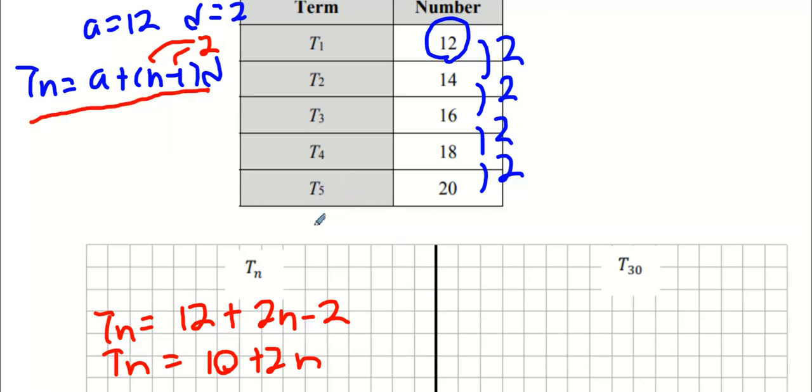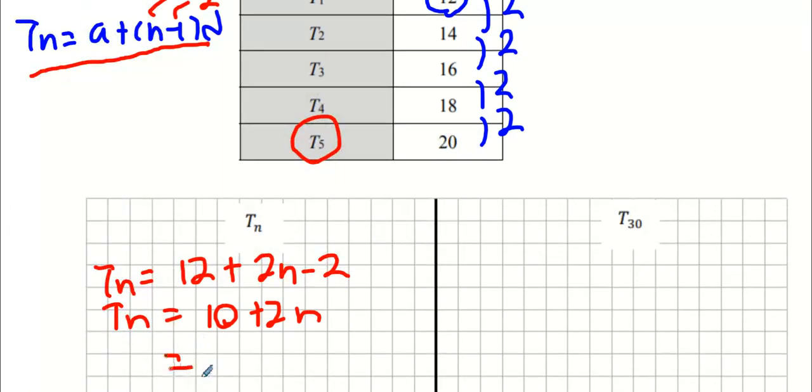It gives you any term you want. If I wanted T5 as an example, we know T5 is 20. But if I replace 5 for N in this equation, it automatically calculates to 20 without me having to do it. That's how the formula works. Once you follow the steps in the recipe, it will automatically give you any term you want.